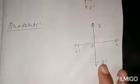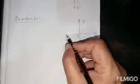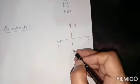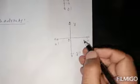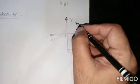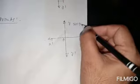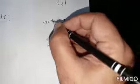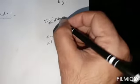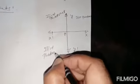Now we have to know what a quadrant is. The X-axis and Y-axis divide this plane into 4 parts, and each part is called a quadrant. This one is the first quadrant, this one is the second quadrant, this one is the third quadrant, and this one is the fourth quadrant.